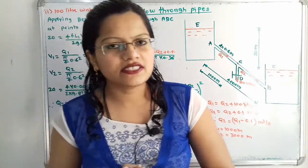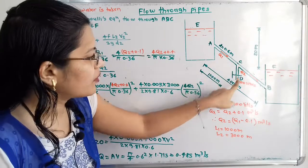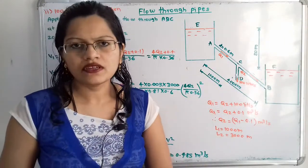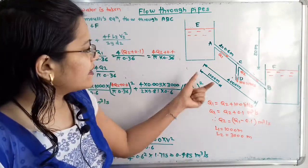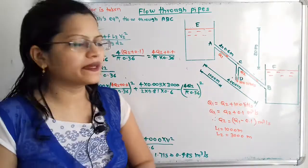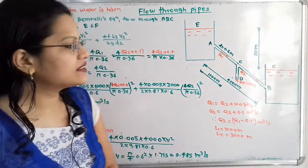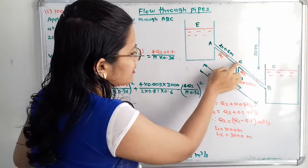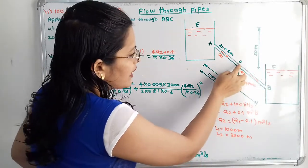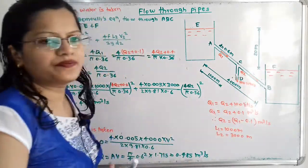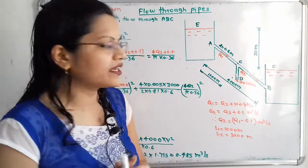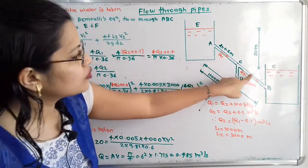In the second case, 100 liters per second of water is taken from the small pipe, which is now open. The small pipe is connected at a distance of 1000 m from the initial point, and we call this junction point C. The discharge from section AC is Q1, and from section CB is Q2. At point C, 100 liters per second is taken off at point D.